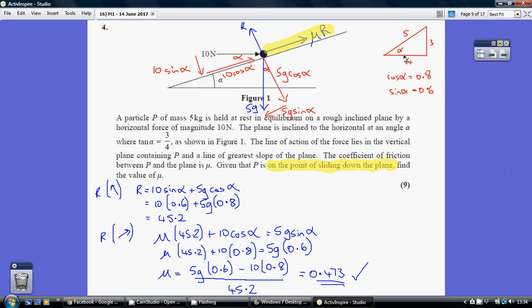So cos alpha is adjacent over hypotenuse, 4 over 5, which is 0.8. And sin alpha is opposite over hypotenuse, 3 over 5, which is 0.6.